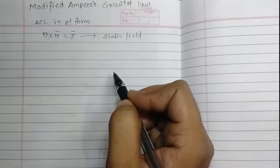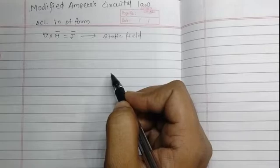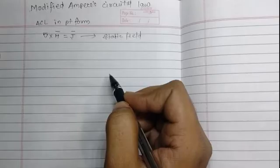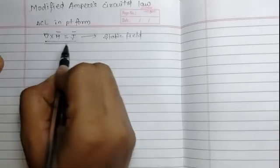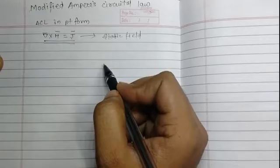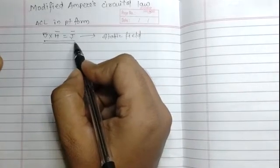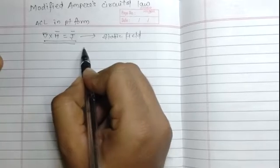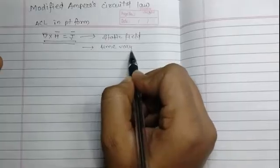This equation applies only for the static magnetic field which produces DC current, that is direct current. But if the field is a time-varying field — that is, the field changes with time — in that case this equation does not hold good. We need to modify this equation by adding something to make it applicable to the time-varying field.